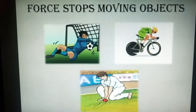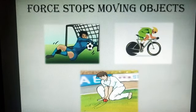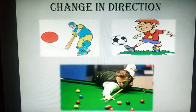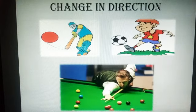Next: force can stop a moving object. When a football player kicks the football towards the goal, the goalkeeper applies force with his hands to stop the ball. Similarly, when you apply brakes, the bicycle stops. A moving ball can also stop on its own due to the presence of friction. A moving ball comes to rest when we apply force with your hand. These are some examples showing that force can stop a moving object.